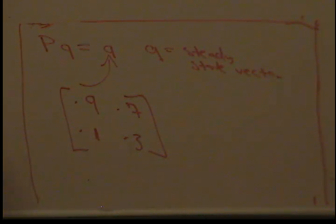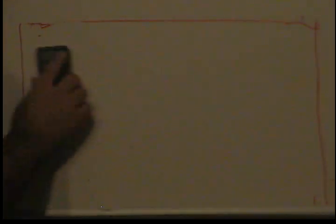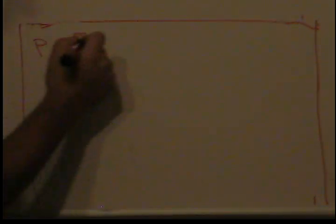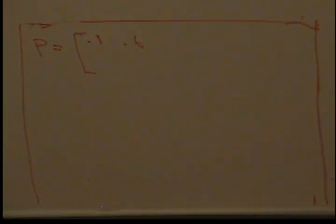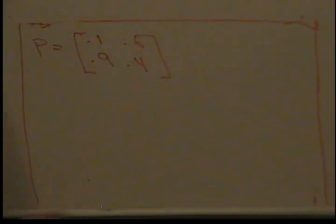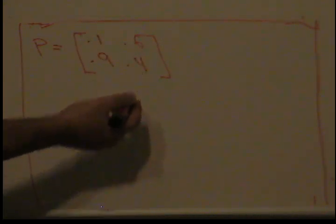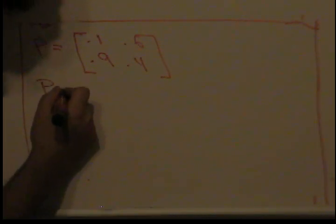The entries can't be negative. So we're going to do a simple problem finding the steady state vector. We have P equals 0.1, 0.6, 0.9, and 0.4. And as you can see, this is a stochastic matrix because 0.9 plus 0.1 is 1, and 0.6 plus 0.4 is 1.